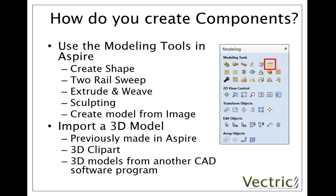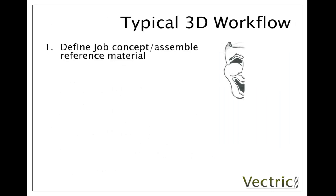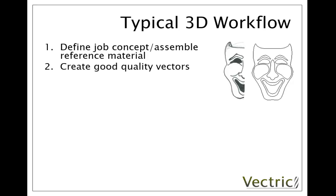Now when you're creating a job, what's the typical 3D workflow? To start with, as with any job 2D or 3D, you're going to define your job concept and assemble reference material — that may be information and parameters from your customer or things you bring together yourself to start building your design. Next you're going to create good quality vectors, since all 3D work using the modelling tools in the software benefits from really good quality vectors — everything you learn about drawing in the software will help you even when you get to 3D, because the better the vectors are the better your 3D shapes will be.